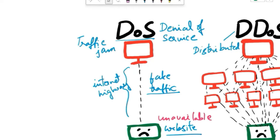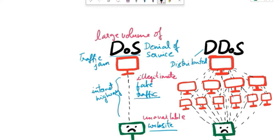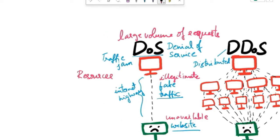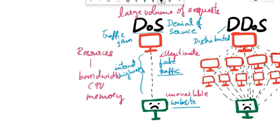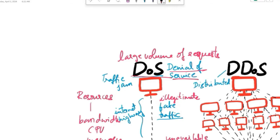A DoS attack is a malicious attempt to disrupt the normal functioning of a targeted server, service or network by overwhelming it with a flood of illegitimate traffic. In a DoS attack, the attacker typically sends a large volume of requests or connections to the target, exhausting its resources such as bandwidth, CPU or memory. As a result, legitimate users are unable to access the service, causing a denial of service.